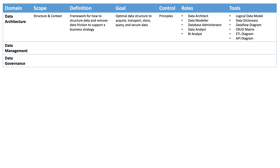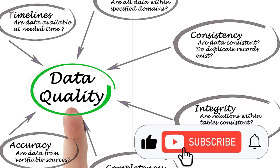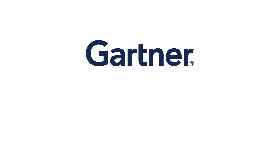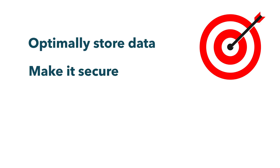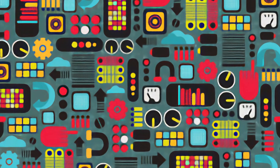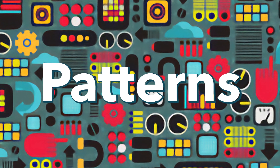We now have enough information to complete the framework for data architecture. Next, let's unpack data management. The purpose of data management is to increase the quality of data in the data structure. Gartner defines data management as practices, architectural techniques and tools for achieving consistent access to and delivery of data across the enterprise. The goal is to optimally store data to make it secure, available and accessible to everyone who needs it. Data management controls primarily through patterns, which are proven ways of design.